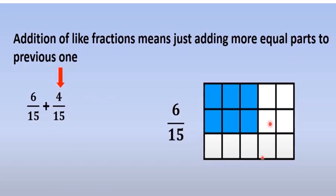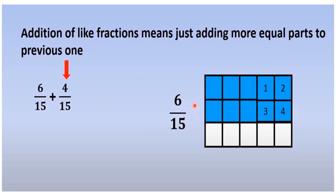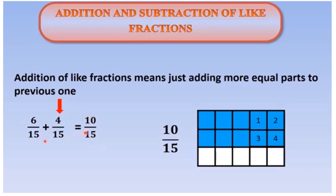In this example, 6 parts are already shaded in the rectangle. Now I want to add 4 more shaded parts, so we are just adding the numerators: 6 plus 4 is 10. So 6 by 15 plus 4 by 15 gives 10 by 15.